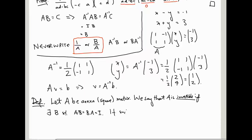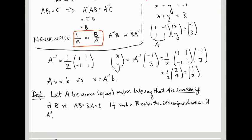If such a B exists, then it's unique, so we're justified in just giving it a single name depending on A, and we call it A inverse.